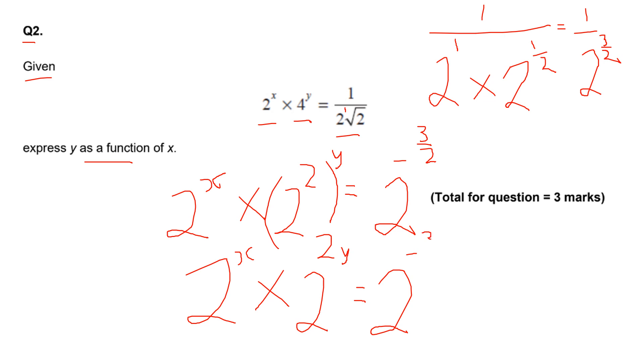Now using the laws of indices for multiplication, when I have the same base and I multiply, I'm going to add the powers. So I have X plus two Y is equal to minus three halves, or minus 1.5.